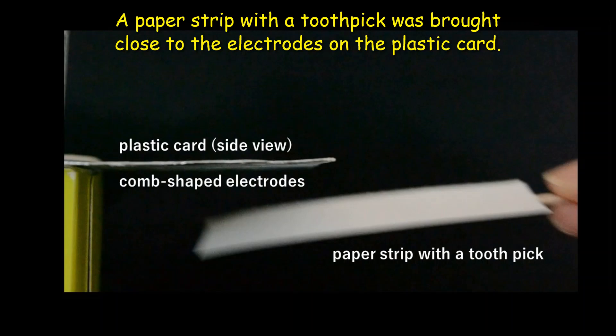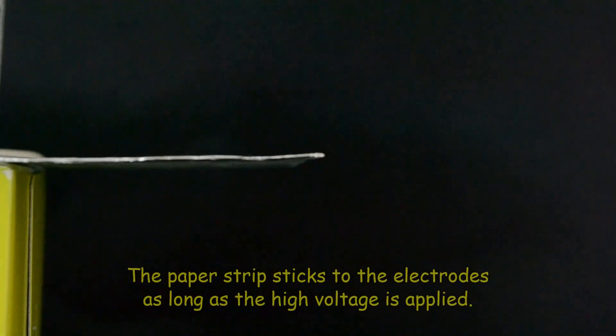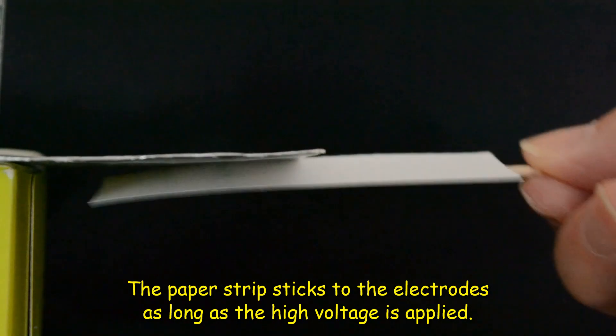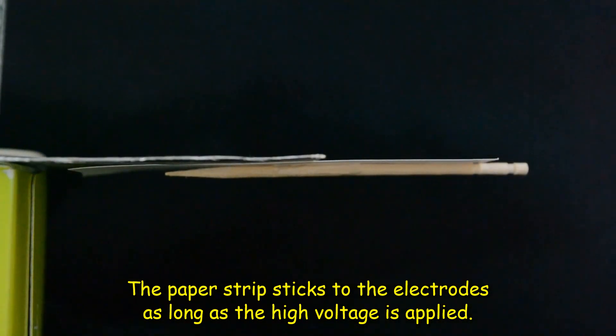A paper strip with a toothpick was brought close to the electrodes on the plastic card. The paper strip sticks to the electrodes as long as the high voltage is applied.